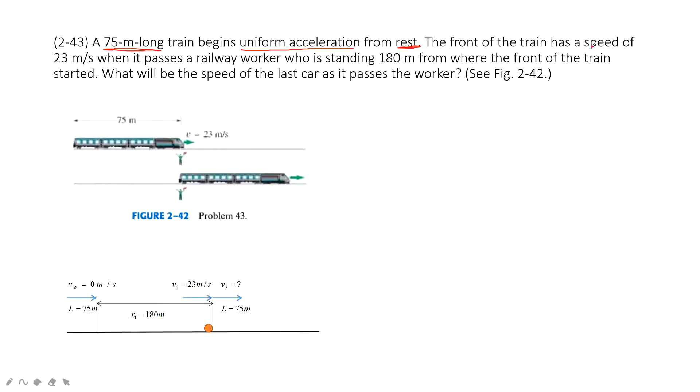Then the front of the train has a speed. This one tells us there is one velocity, 23 meters per second, when it passes a railway worker. The railway worker is standing 180 meters from where the front of the train started.